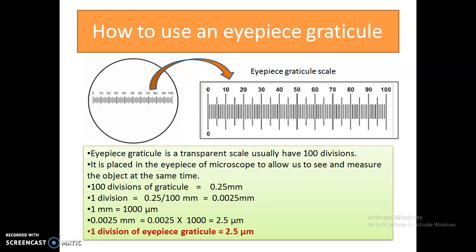The entire length of this scale is equal to 0.25 millimeters. That means 100 divisions of the scale equal 0.25 millimeters. Therefore, one division equals 0.25 divided by 100, which gives us a value of 0.0025 millimeters.